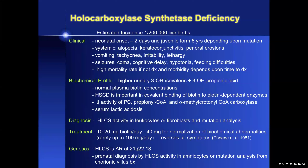Holocarboxylase synthetase deficiency is a severe autosomal recessive disorder. Depending on the severity of the mutation, it may have neonatal onset, or in milder mutations, later onset even after six years of age. Striking distinguishing systemic features include alopecia, keratoconjunctivitis, and perioral erosions, as well as vomiting, irritability, and lethargy. Neurologic features include encephalopathy with seizures, hypotonia, and feeding difficulties, with a high morbidity and mortality rate. The biochemical profile reflects decreased activity of pyruvate carboxylase, propionyl-CoA, and alpha-methylcrotonyl-CoA carboxylases, with accumulation of urinary 3-hydroxyisovaleric and 3-hydroxypropionic acid and lactic acidosis. It can be diagnosed by measurements of activity in leukocytes or fibroblasts and by gene mutation analysis.